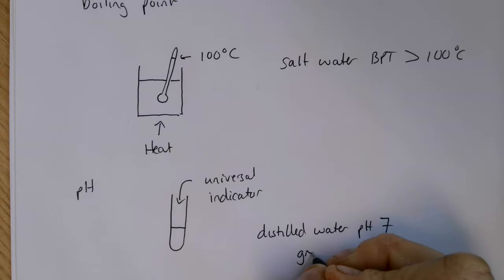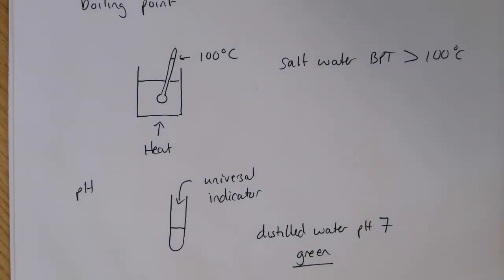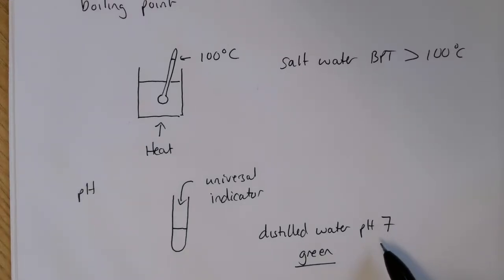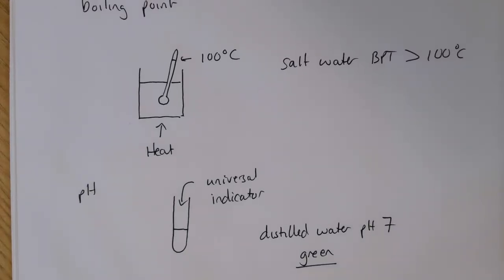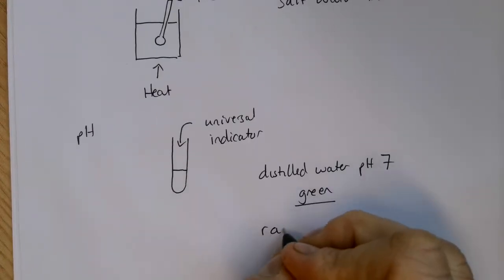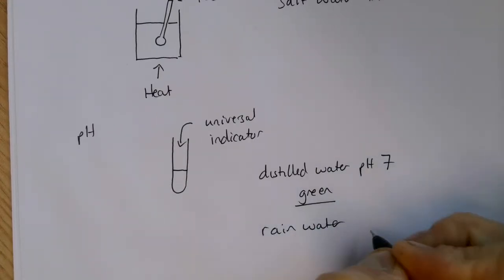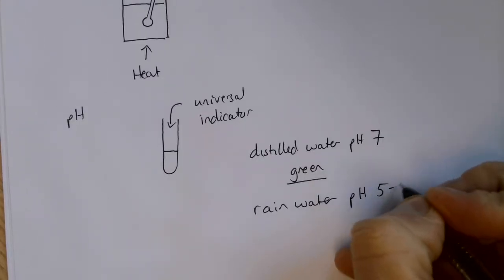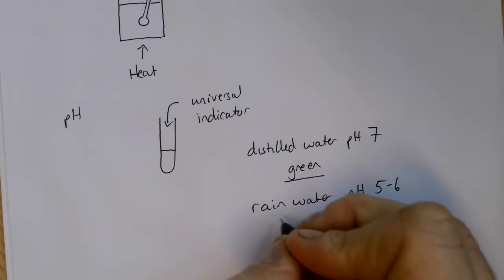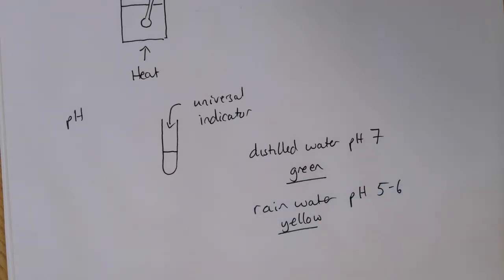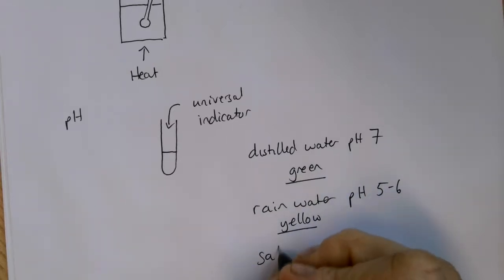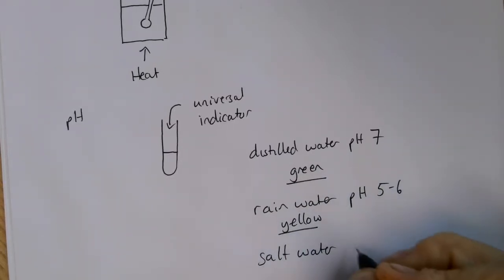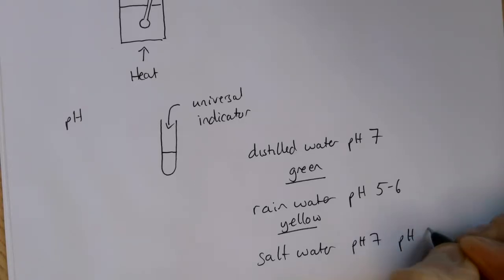However, there are other water samples that would be neutral, that would have a pH of 7, but could also have some salt dissolved in them. What we tend to find is that rainwater is often ever so slightly acidic, so maybe about pH 5 to pH 6, so we would expect a yellow color from our universal indicator. Some salt water samples can be pH 7, but they can also be slightly alkaline as well, so maybe a pH 8, in which case we'd be expecting a green for that and a green-blue color for pH 7.